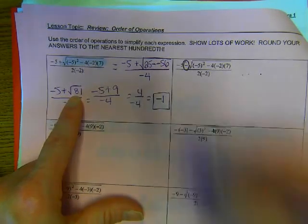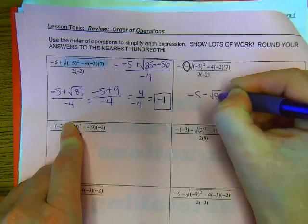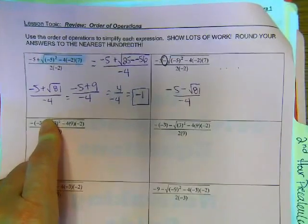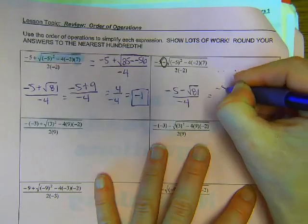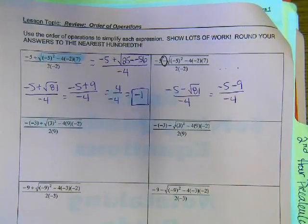Instead of negative 5 plus root 81, it's going to be negative 5 minus root 81 over negative 4. Which is negative 5 minus 9 over negative 4. What's negative 5 minus 9?